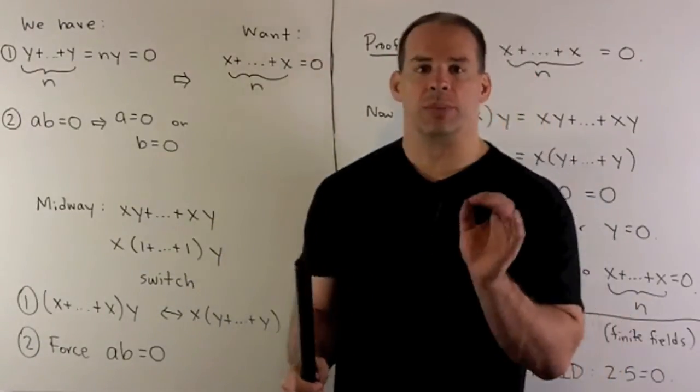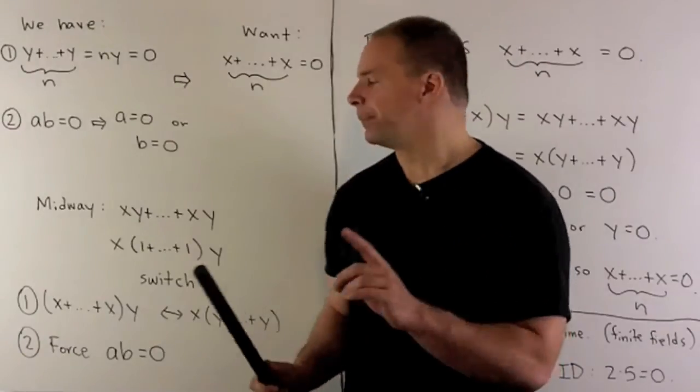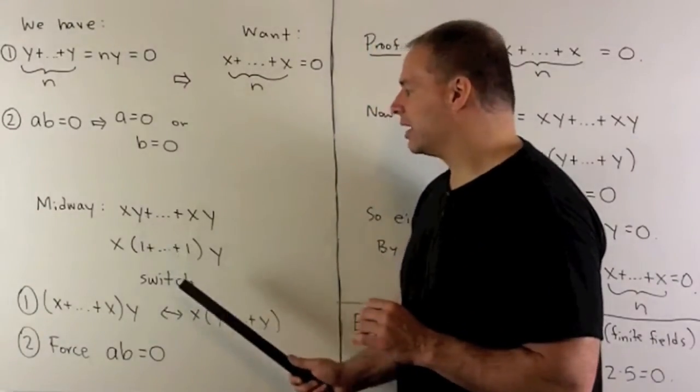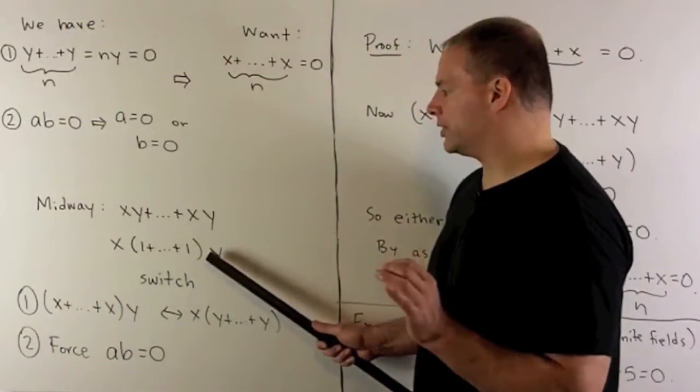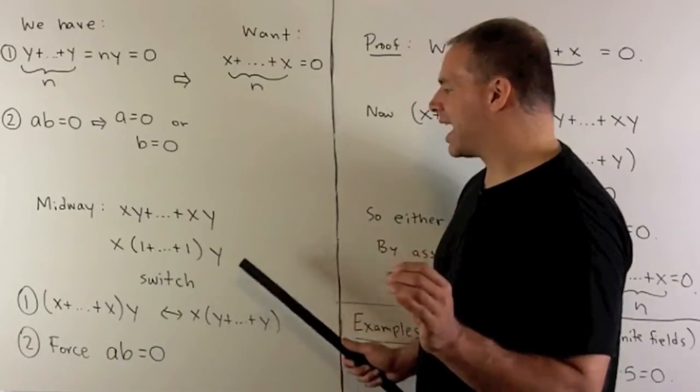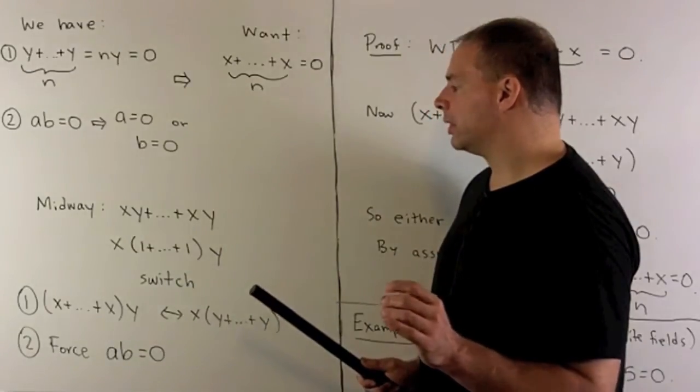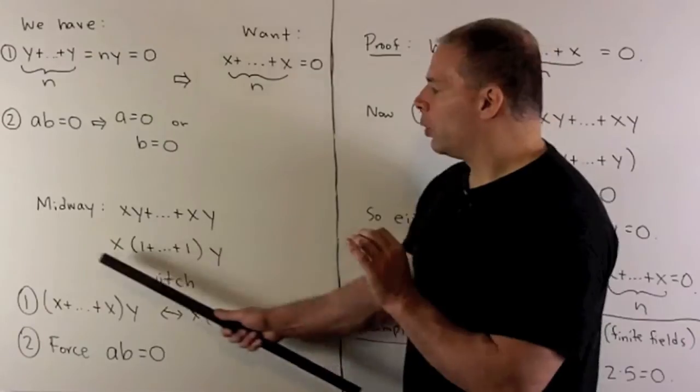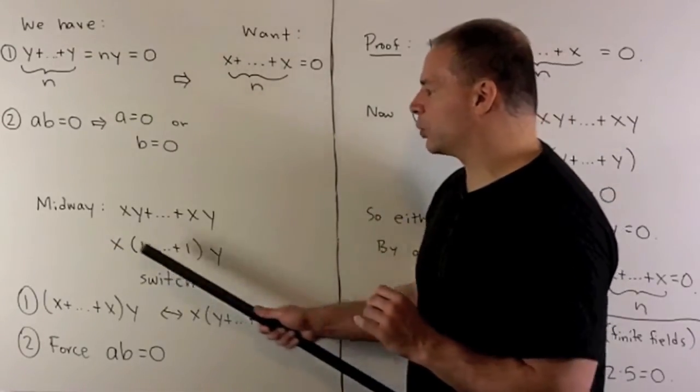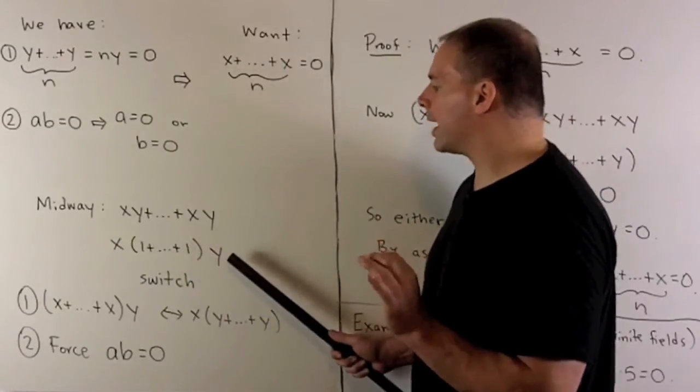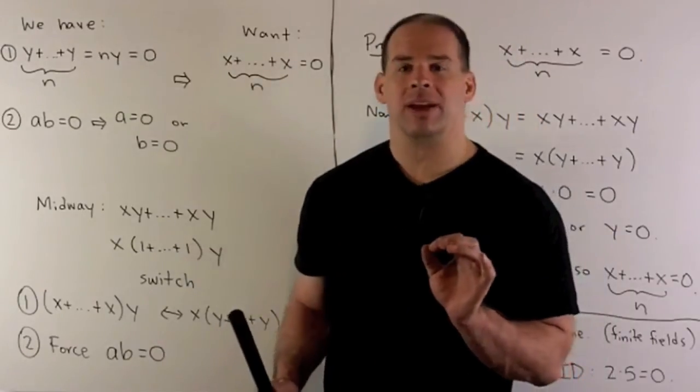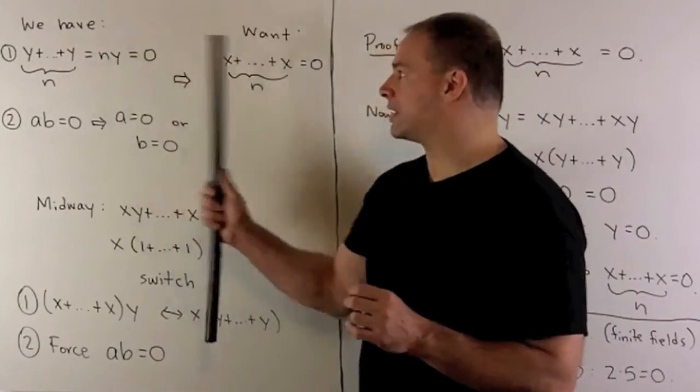Now, if we assume that we have a one in here, we could factor this thing as x times n ones added together times y. You'll note, when I have it written out like this, it's pretty clear to see that I can switch the x in if I want, or I can switch the y in if I want. That's going to let me go from one side to the other.